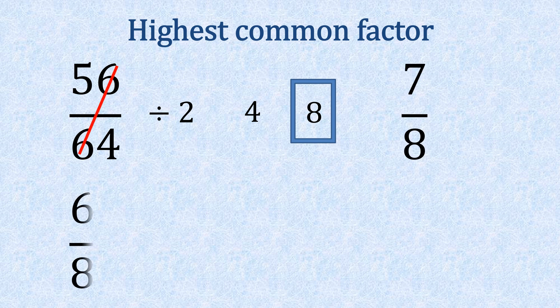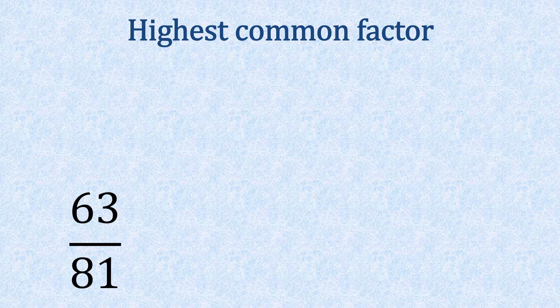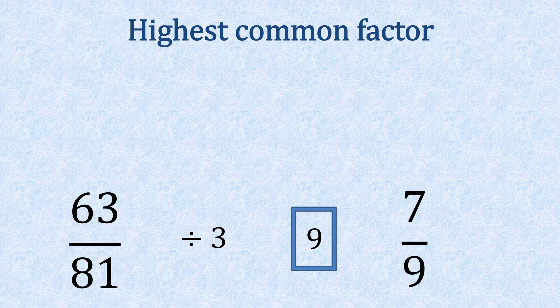If we had sixty-three eighty-ones, hopefully you can see that three goes into that and so does nine. So sixty-three divided by nine gives us seven, and eighty-one divided by nine gives us nine, with the answer of seven ninths. And we can't get any smaller than that.